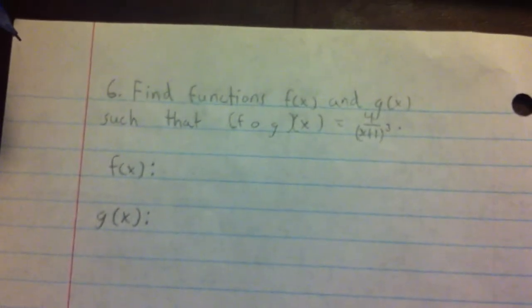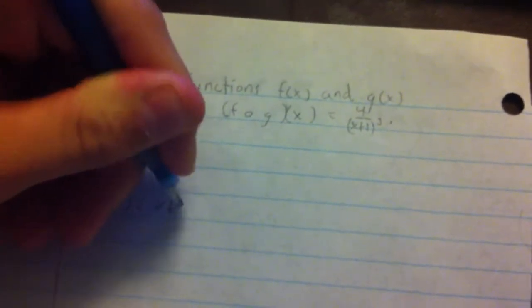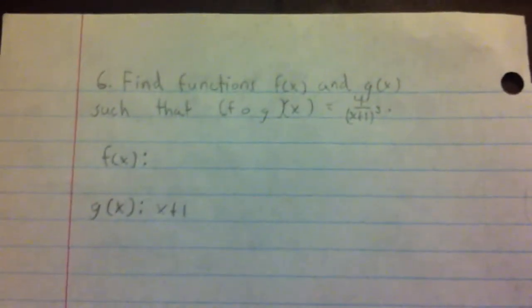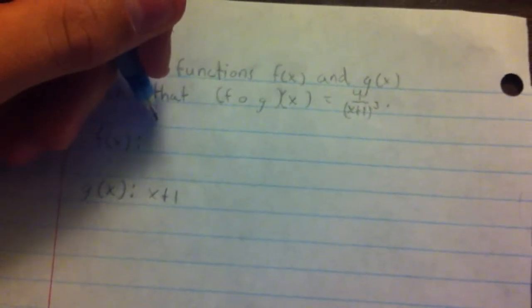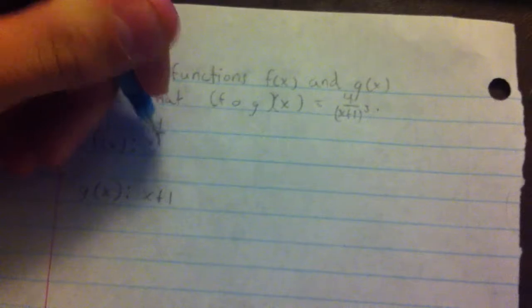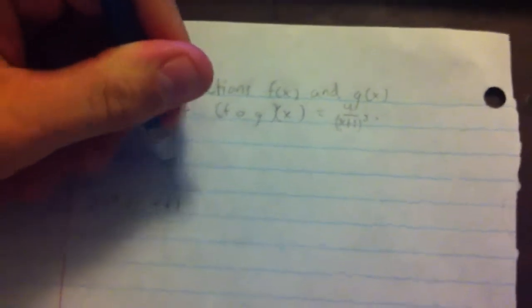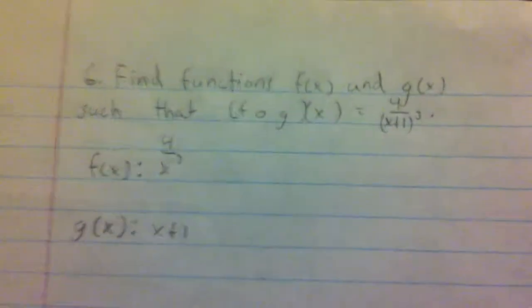g of x could be x plus 1, and if g of x was x plus 1, then f of x would have to be 4 over x to the third. Alright, so that's the first way.